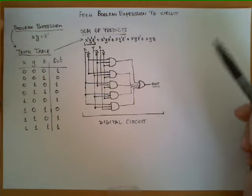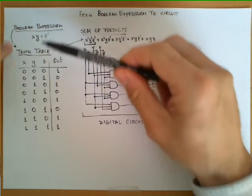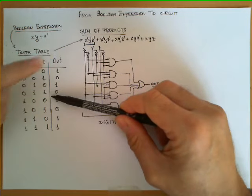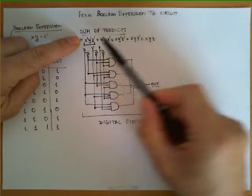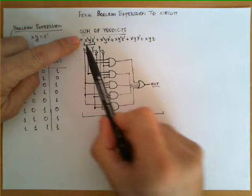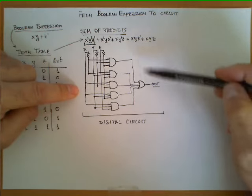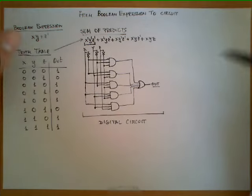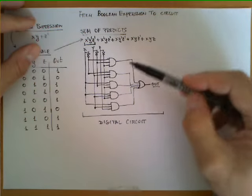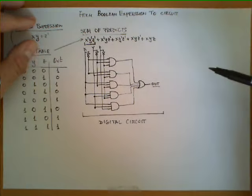Now let's summarize the process. We started with the expression, we obtained the truth table. With the truth table we know how to obtain a canonical representation which is the sum of products and this sum of products corresponds almost one to one with the structure of this circuit. The only thing that we have used is gates with arbitrary number of inputs.